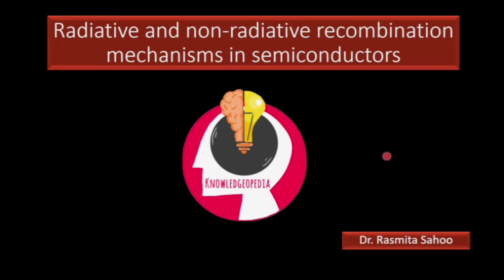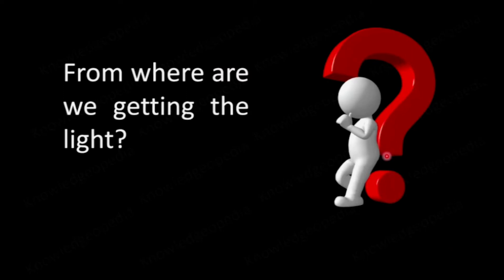Hello friends, welcome back to our colorful journey of unit 3, that is optoelectronics. Today we will be discussing radiative and non-radiative recombination mechanisms in semiconductors. In the previous video on the introduction to optoelectronics, I showed you many applications of optoelectronic devices and we saw how our life is becoming so colorful because of these devices. So from where is this light coming? What is the mechanism behind the devices from which we are getting light — that means the electrical energy being converted into light energy?